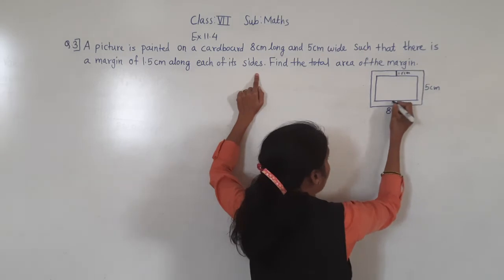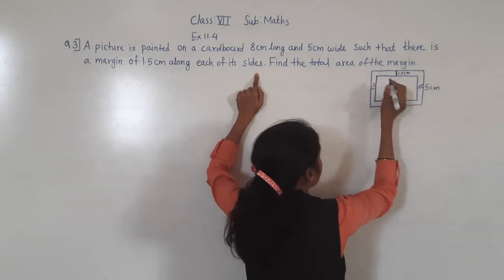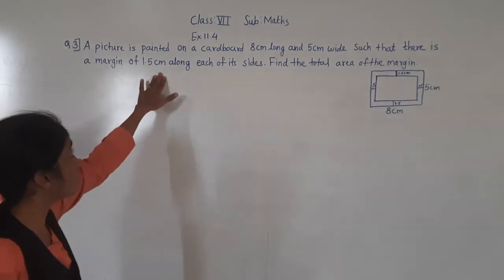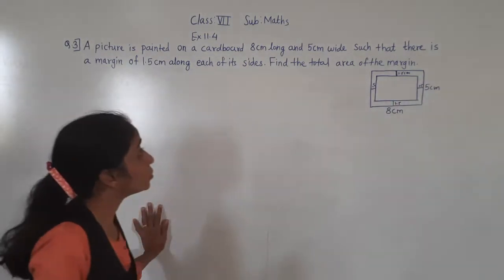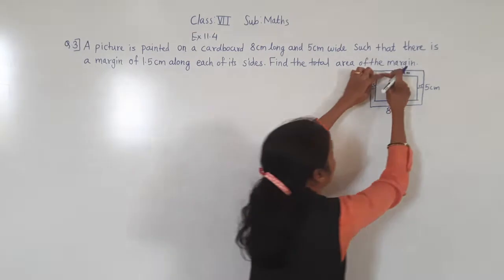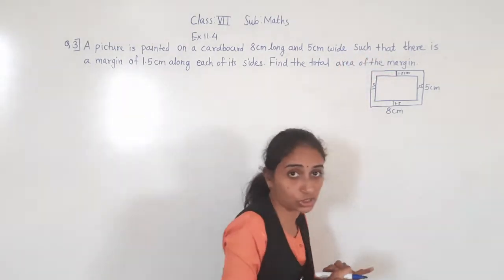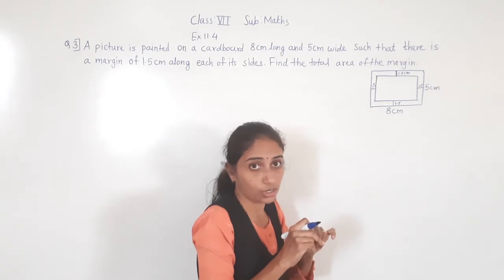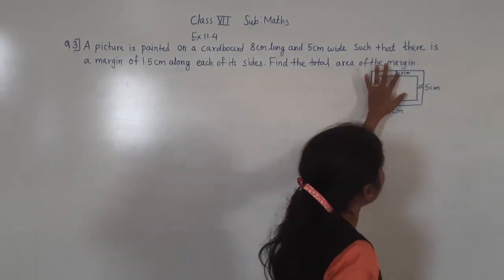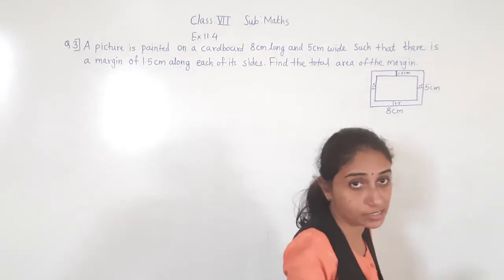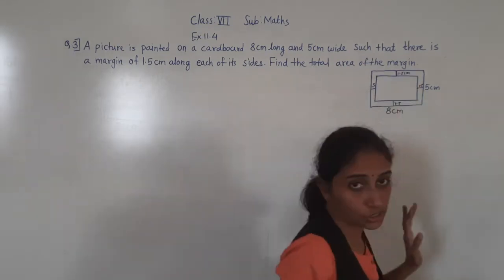From here 1.5, 1.5, 1.5, 1.5 — means each of its sides has a margin of 1.5 cm. We have to find the area of this margin. See whenever you are drawing a picture, you draw the margin first and then print the picture. Here also, 1.5 cm margin is there for all the sides. So we have to find the area of this margin.